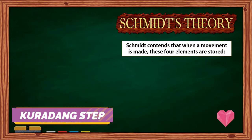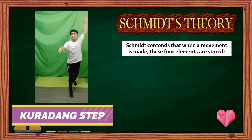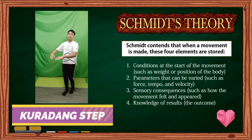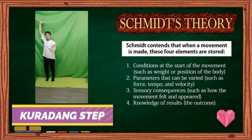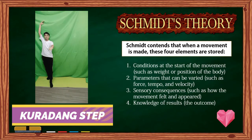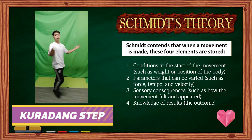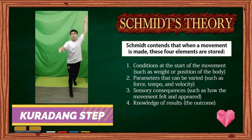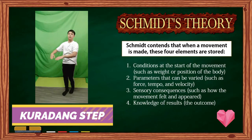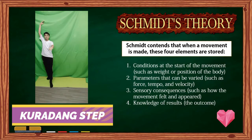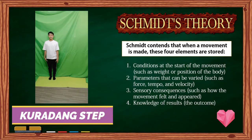Schmidt contends that when a movement is made, these four elements are stored: 1. Conditions at the start of the movement, such as weight or position of the body. 2. Parameters that can be varied, such as force, tempo, and velocity. 3. Sensory consequences, such as how the movement felt and appeared. 4. Knowledge of results — the outcome.